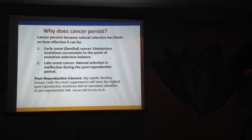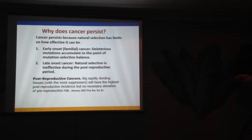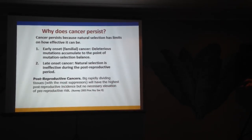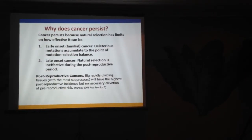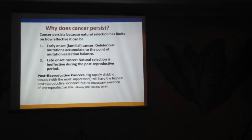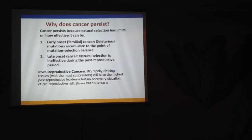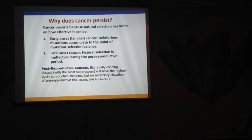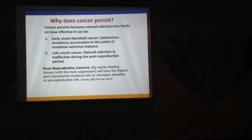The interesting result for post-reproductive cancers is that the model clearly predicts that big, rapidly dividing tissues — which need the most suppressors to prevent cancer pre-reproductively — will have the highest post-reproductive risk, even with no pre-reproductive increase. That's because natural selection gets you one or two mutations away from disaster pre-reproductively, but if that tissue continues dividing rapidly with many cells, post-reproductively you'll accumulate those additional mutations. A small, slow-dividing tissue stays one or two away from disaster but won't progress post-reproductively.